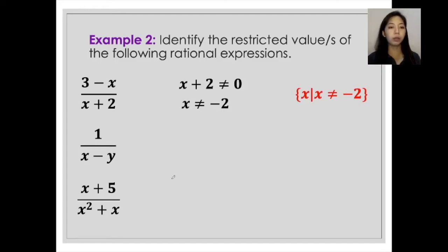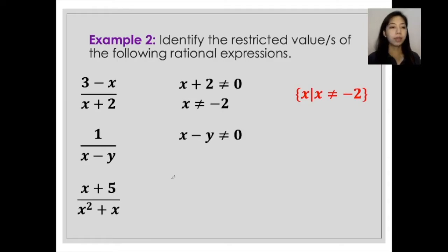For the second given, 1 over x minus y, again, you have to identify the value of the variable in the denominator which would make it zero, because that would be the restricted value. So get the entire denominator and set it up this way: x minus y is not equal to zero.